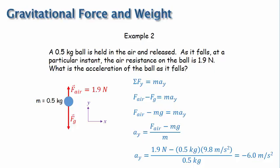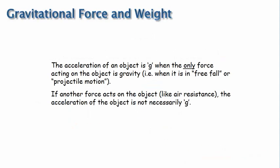This time, the acceleration of the ball is not g, or 9.8 meters per second squared. The point I want to make, then, is this. The acceleration of an object is g when the only force acting on the object is gravity, i.e., when it is in free fall or projectile motion. If another force acts on the object, like air resistance in this case, the acceleration of the object is not necessarily g.